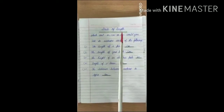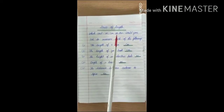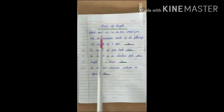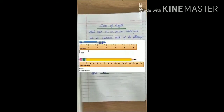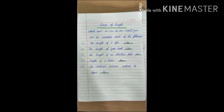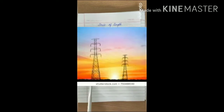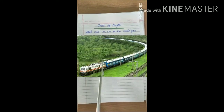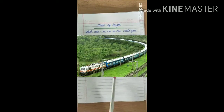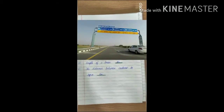Units of length — which unit, meter, centimeter, or kilometer, would you use to measure each of the following? The length of a pen: centimeter. The length of your book: centimeter. The height of an electric pole: meter. The length of a train: meter. The distance between Lucknow to Agra: kilometer.